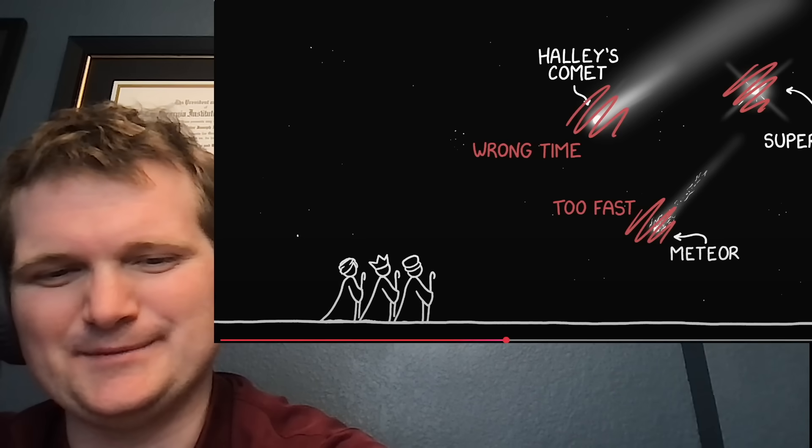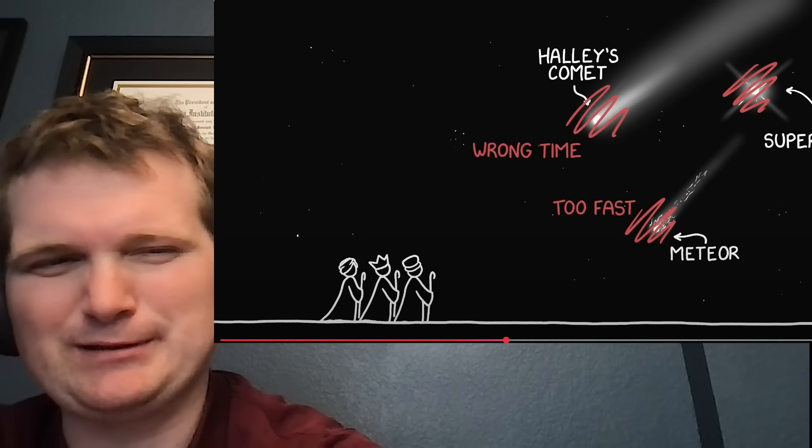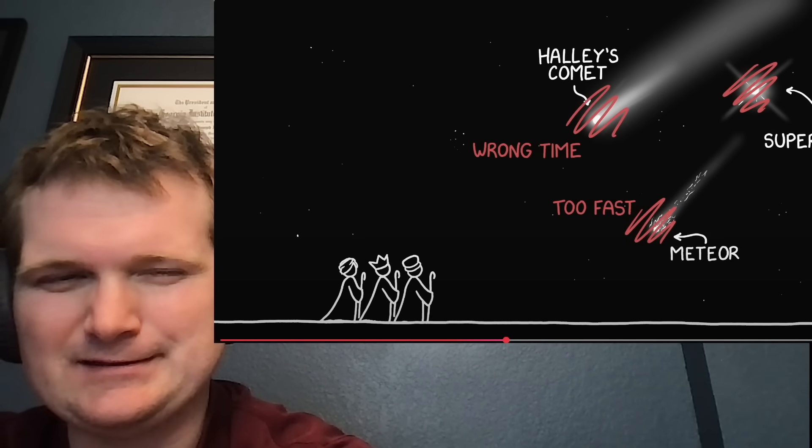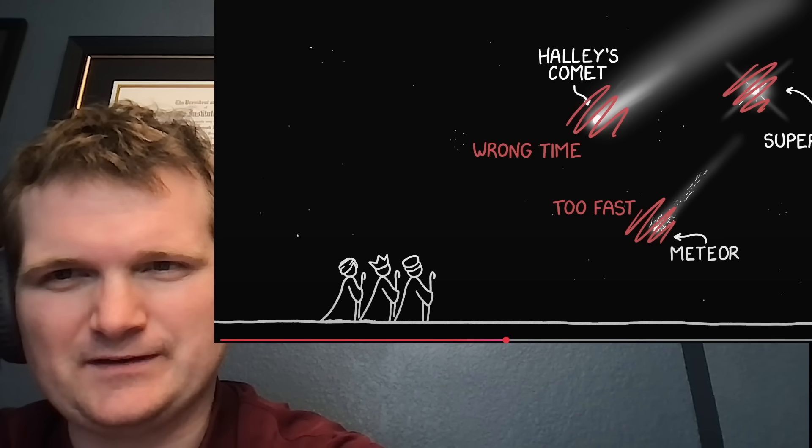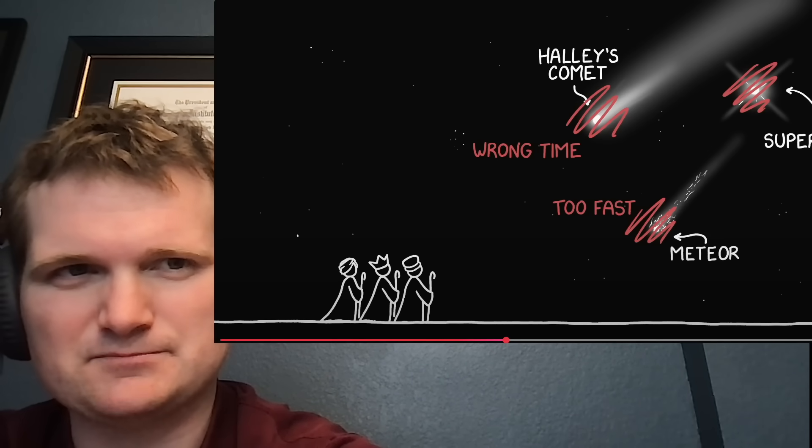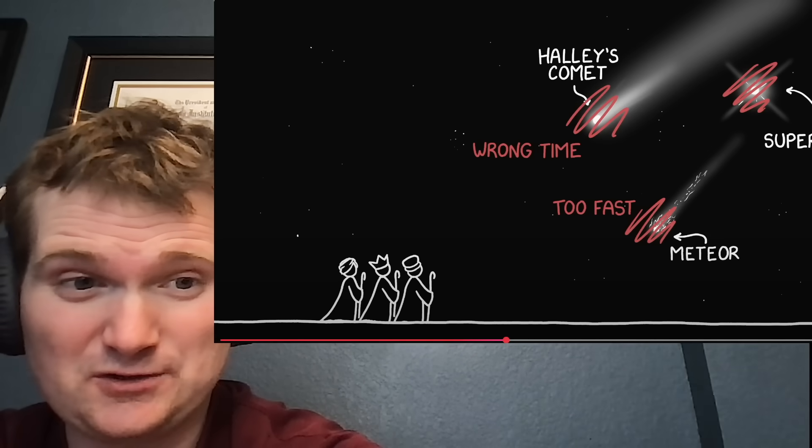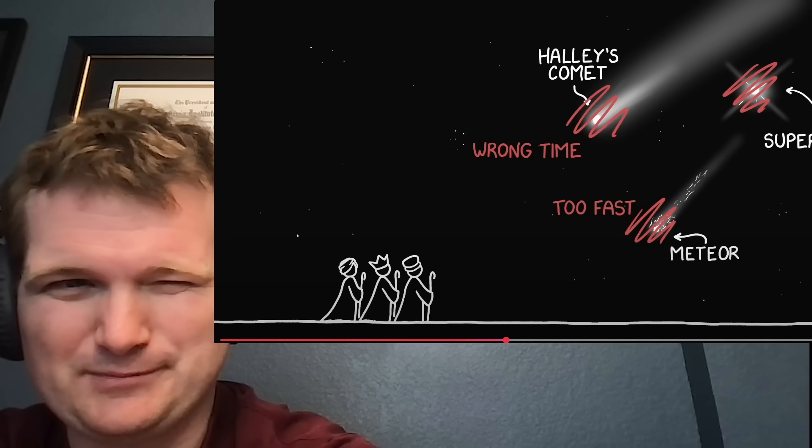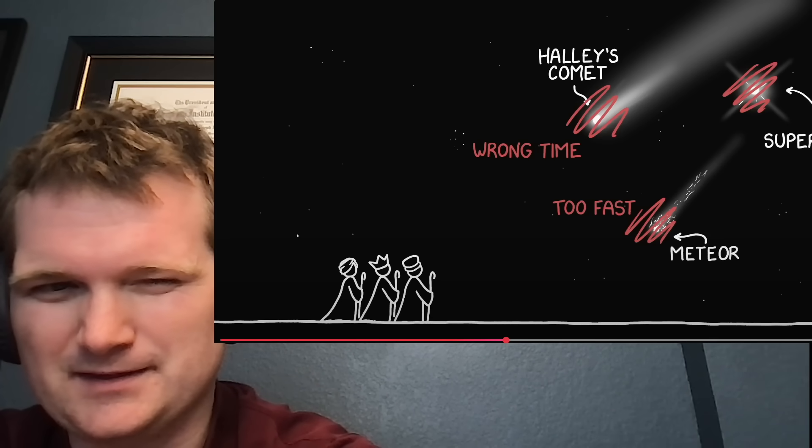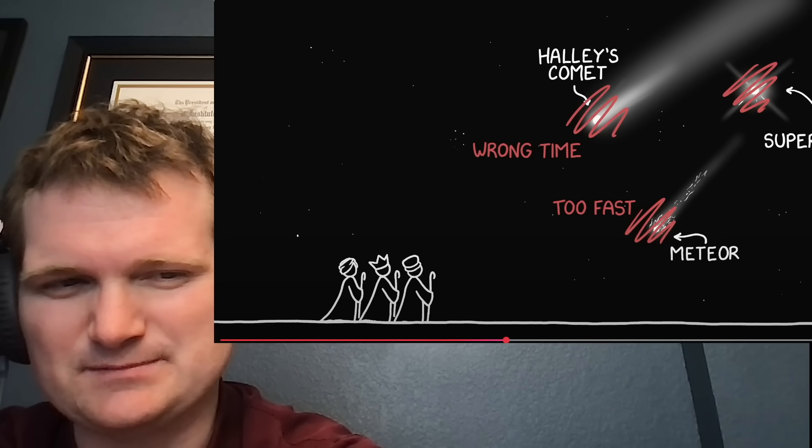Halley's comet, that doesn't really do it. I wonder if any planets were aligned back then, and if they would have had a sense, say, if Jupiter and Saturn were aligned, it showed up extra bright if people accounted for that back then. You know, some planets are visible with the naked eye.